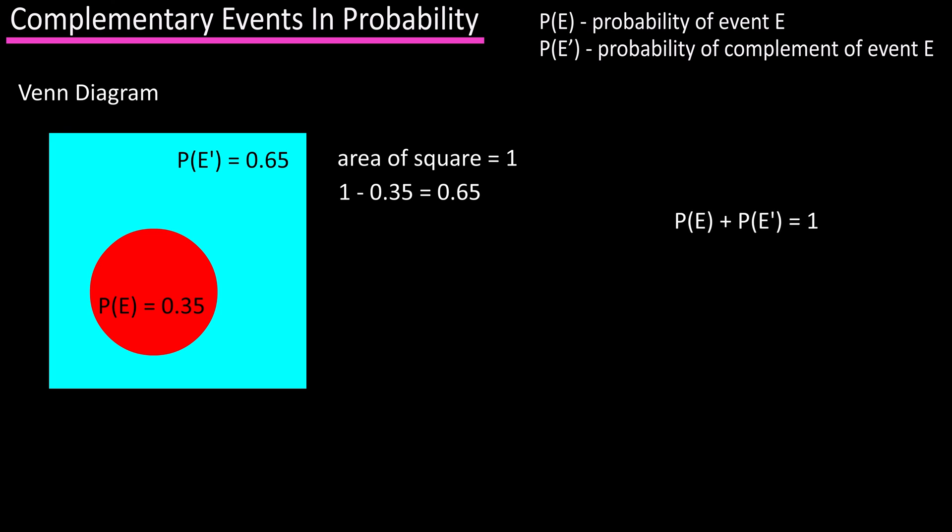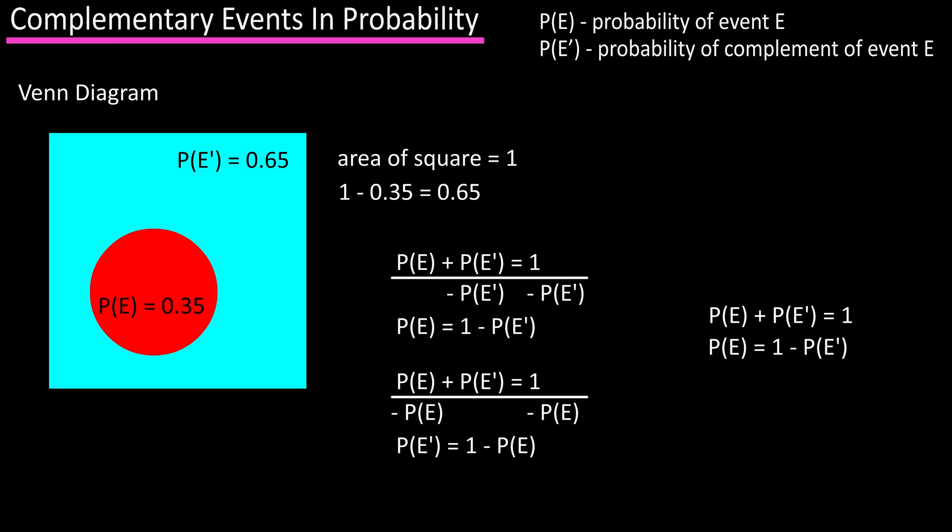And as you just saw, we can use this equation two other ways. First, we can subtract the probability of E prime from both sides to get the probability of E equals 1 minus the probability of E prime. Or again, from our original equation, we can subtract the probability of E from both sides to get the probability of E prime equals 1 minus the probability of E.